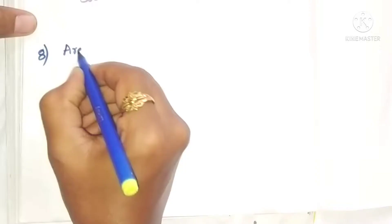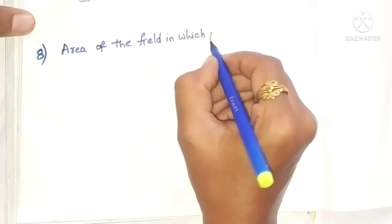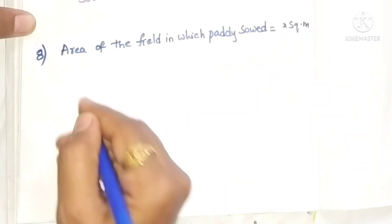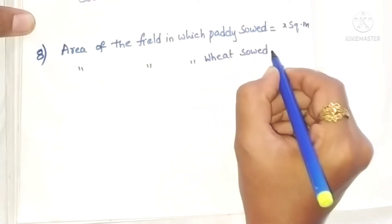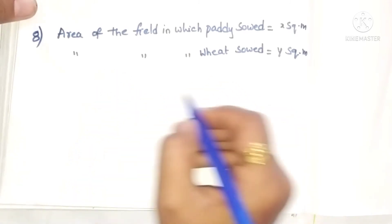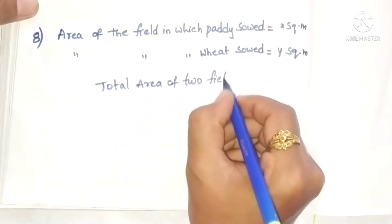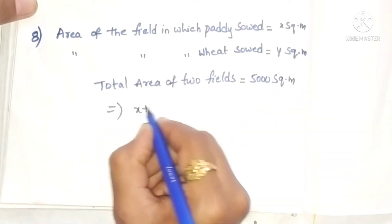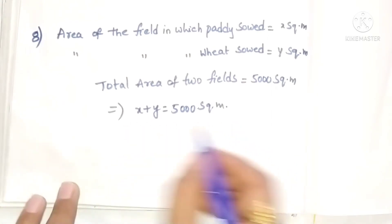So we write: area of the field in which paddy is sown equals X square meters. Similarly, area of the field in which wheat is sown equals Y square meters. The total area of the two fields is given as 5000 square meters. That implies X plus Y equals 5000 square meters. This is the linear equation.